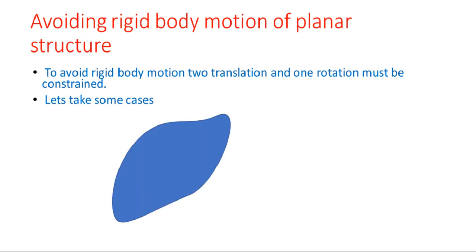Let's take an example. Here is a random structure not subjected to any constraints. If we apply a load, it is a simple dynamics problem resulting in rigid body translation and rotation — the body will rotate or translate depending on the type of load applied. Since there are two translations and one rotation as rigid body motions, I will now provide a pin constraint. From the basic definition of a pin joint, the two translations are constrained.